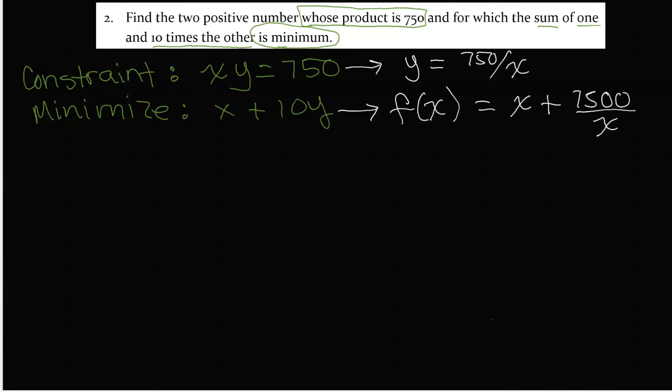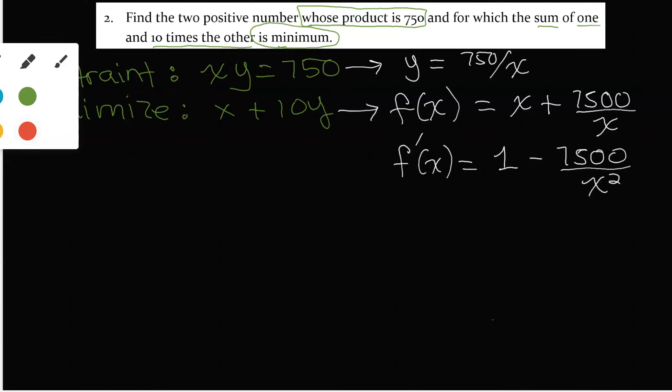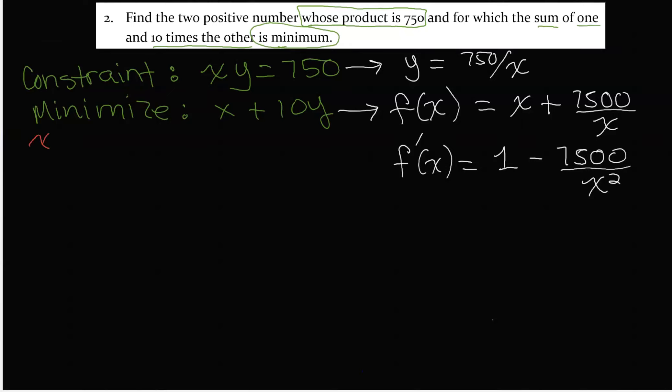In order to minimize that, we would have to find the derivative, and the derivative will be 1 minus 7500 over X squared. X cannot be 0, and as a matter of fact X is a positive number, so we know that X has to be greater than 0, and Y also has to be greater than 0. Those are the restrictions for X and Y.